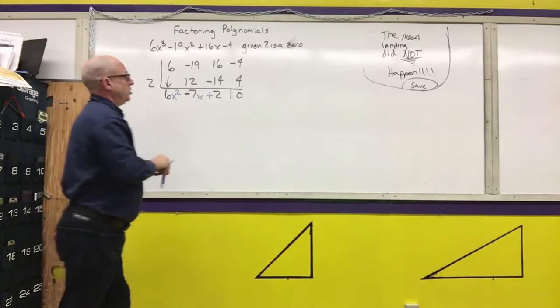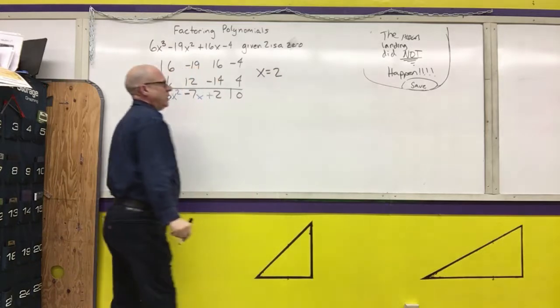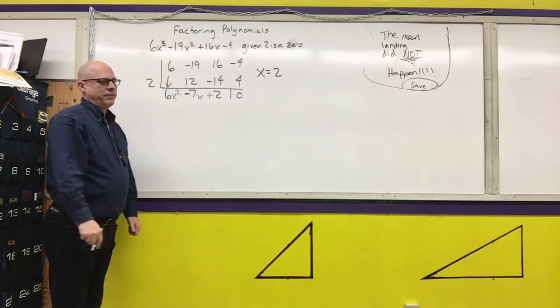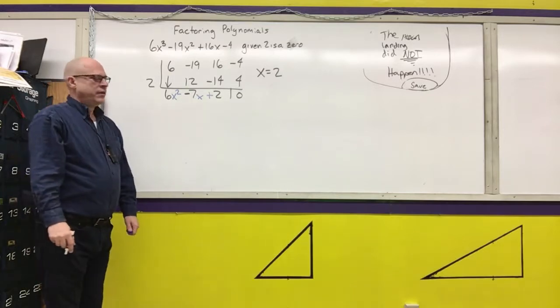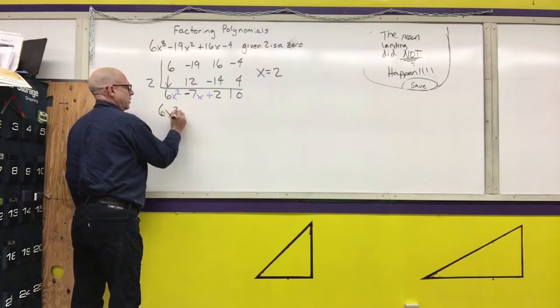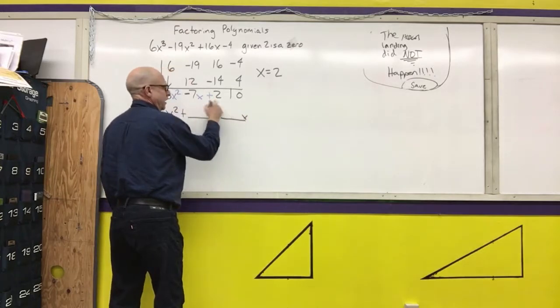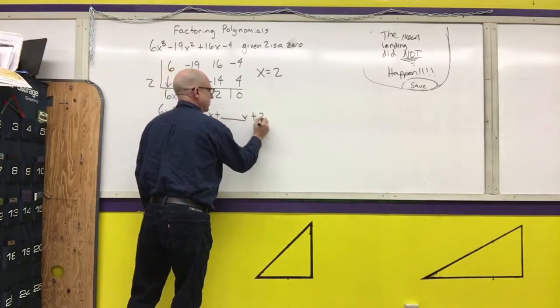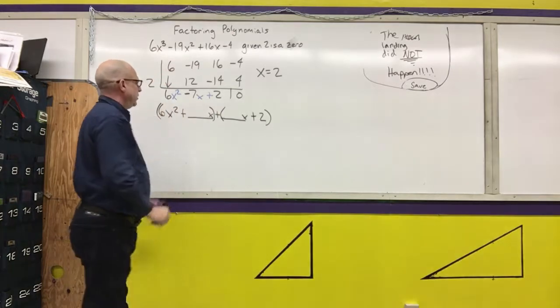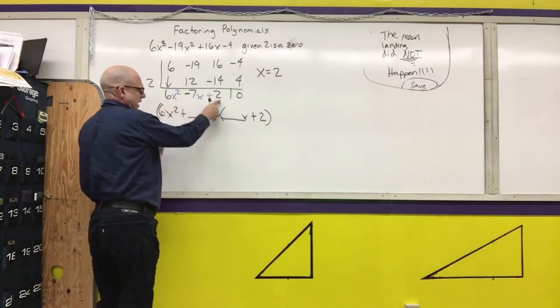So I know that 2 is a zero or a solution. Now what I need to do is find the other solutions, and I'm going to do that by factoring this polynomial. I'm going to factor by grouping. So I copy the first term, put plus blank x, plus blank x, then copy the last term. Put parentheses around the first two, parentheses around the last two, with a plus sign in between them.